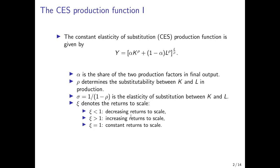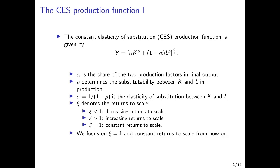If xi is smaller than 1, there are decreasing returns to scale — if I double both input factors, capital and labor, I can produce less than twice the amount. If xi is greater than 1, there are increasing returns to scale, meaning doubling capital and labor produces more than twice the output. And in the case of xi equal to 1, there are constant returns to scale, meaning doubling capital and labor also doubles output. From now on, we focus on the constant returns to scale case, xi equal to 1.